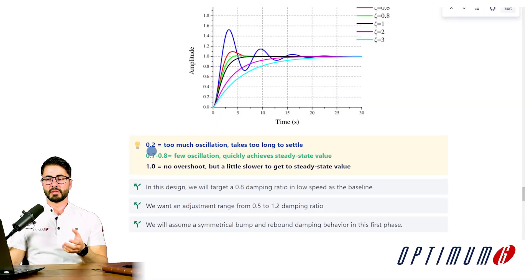In summary, 0.2 damping ratio, you have too much oscillation. If you go higher, one, you have no overshoot but it takes a little longer for you to settle. While 0.7 or 0.8 seems to be a good compromise.